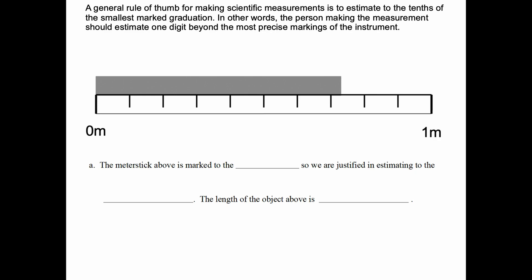Pictured here is a meter stick. It's one meter long. And we want to know what place value is the meter stick marked to. Well, it's subdivided into ten equal pieces. So, this meter stick is marked to the tenth. So, we would be justified in estimating to what decimal place? We want to go one beyond what it's marked to. So, we can estimate to the hundredth.